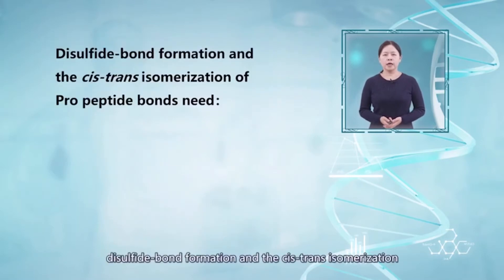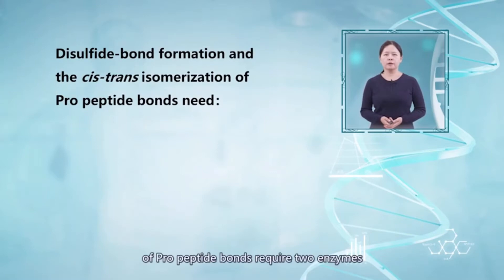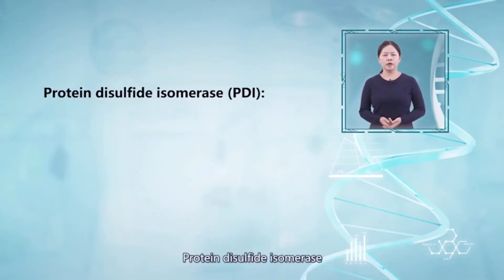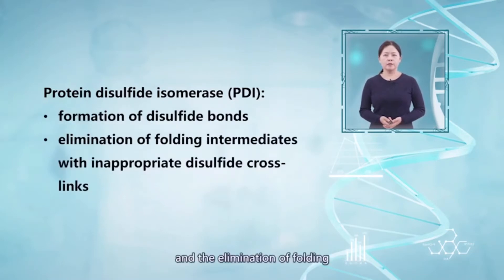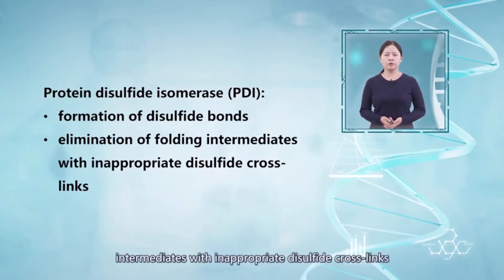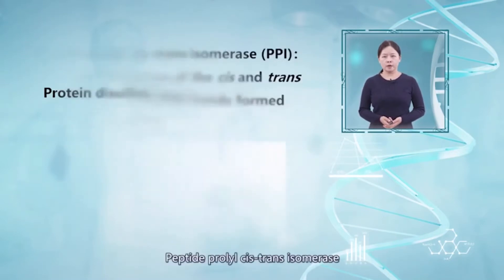In addition, disulfide bond formation and the cis-trans isomerization of proline peptide bonds require two enzymes. Protein disulfide isomerase catalyzes the formation of disulfide bonds and the elimination of folding intermediates with inappropriate disulfide crosslinks.